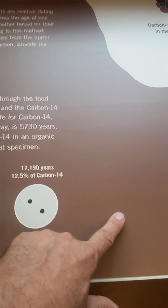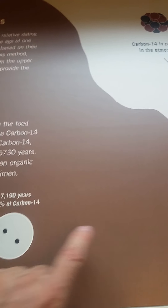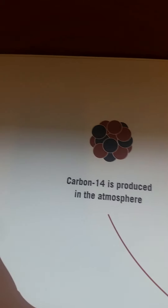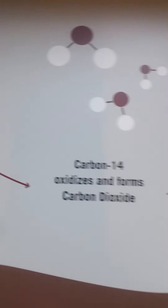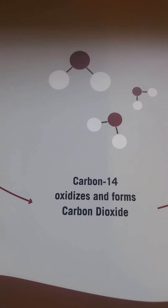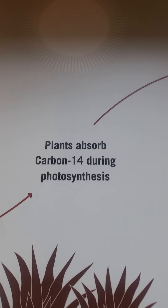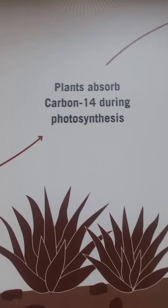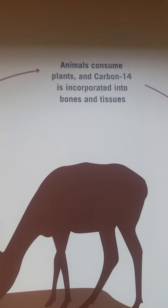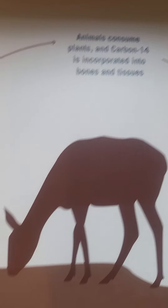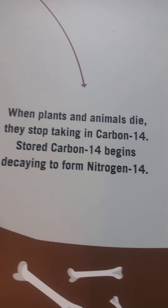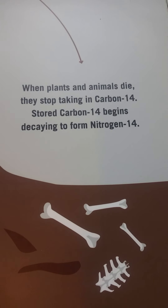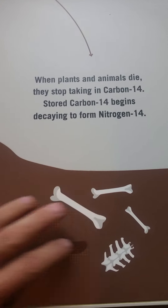Carbon-14 is produced in the atmosphere, oxidizes, and forms carbon dioxide. Plants absorb the carbon-14 during photosynthesis. Animals consume plants, incorporating it into their bone and tissue. When they die, they stop taking in carbon-14 and it starts to decay, forming nitrogen-14.